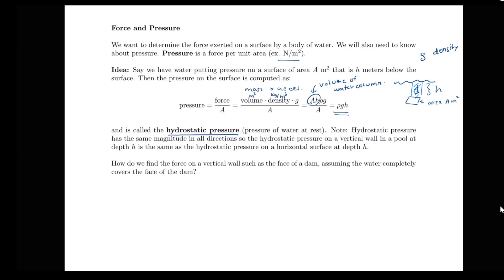One useful property is that hydrostatic pressure has the same magnitude in all directions. We thought about pressure on a horizontal surface, but the hydrostatic pressure on a vertical wall in a pool at depth h is the same as on a horizontal surface at depth h. We're going to be mainly looking at problems of computing the force on a vertical wall, such as on the face of a dam, assuming the water completely covers the face.